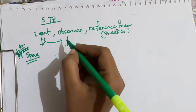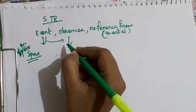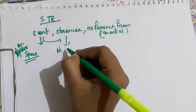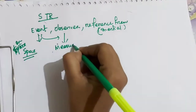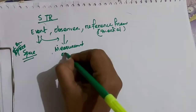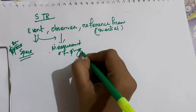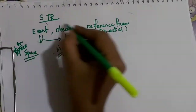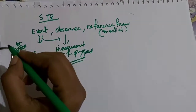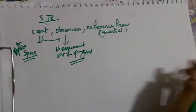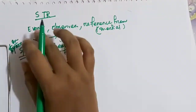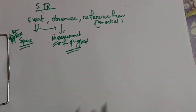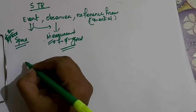When an event happens, an observer observes it from a reference frame and makes measurements of physical quantities. He or she can also study the characteristics of that event. These are the three important things we will encounter in the special theory of relativity.